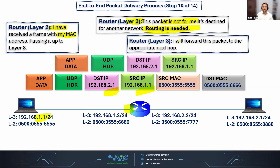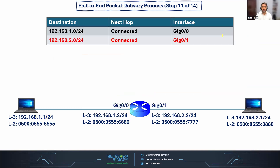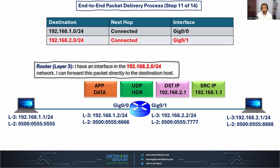The router says: since I need to perform routing, I will forward this packet to the appropriate next hop or next interface IP address. In step 11, the router looks up the routing table. It finds that the 2.0 network is directly connected to its interface 0/1. Since the network is directly connected, the router can forward this packet directly to the destination host.